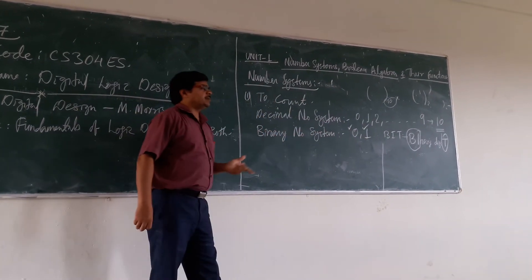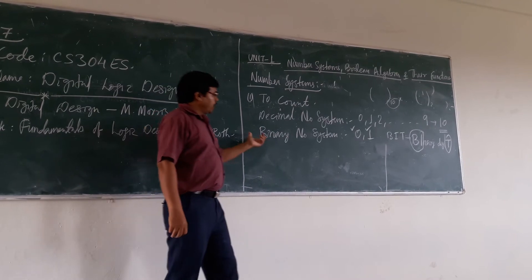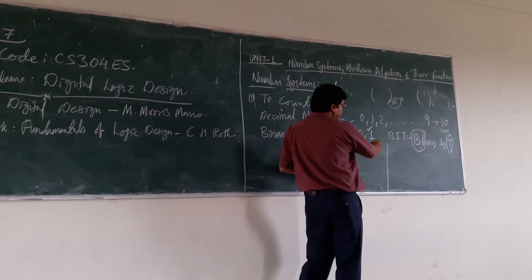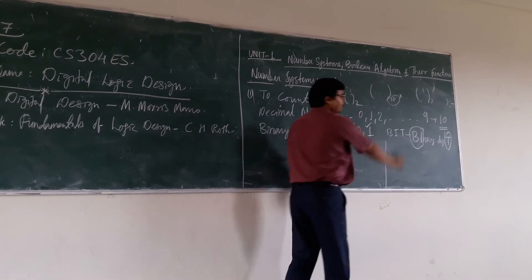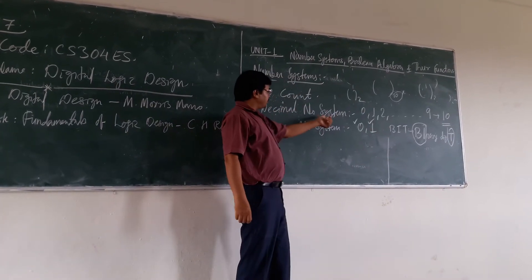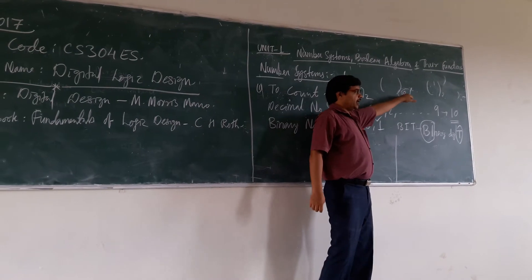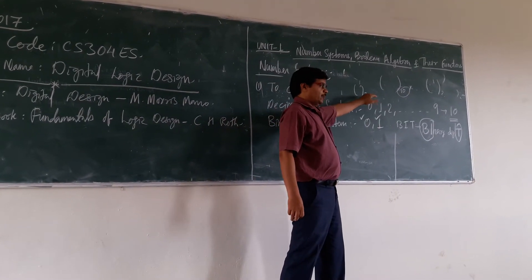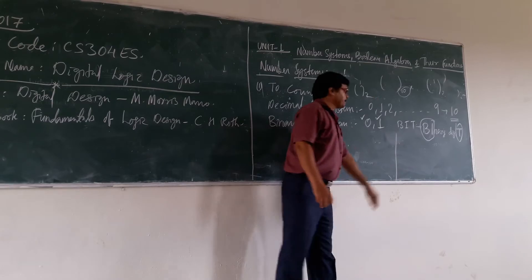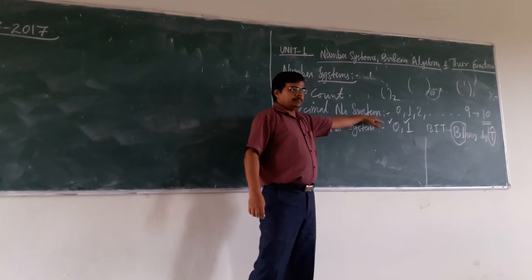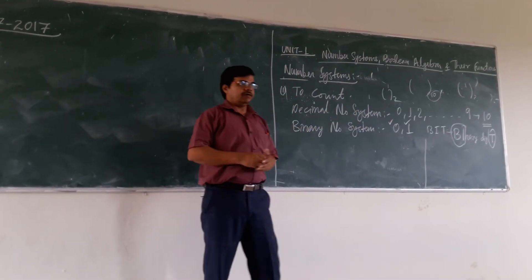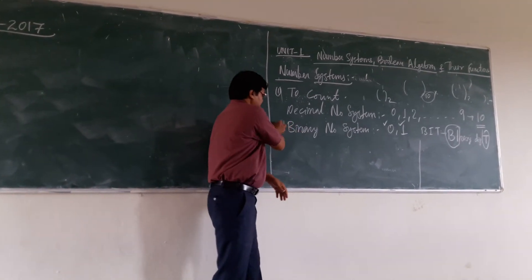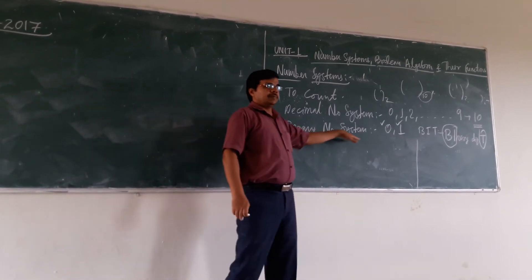In the binary number system, the base will be 2. In the decimal number system, you are having base 10; in the binary number system, you are having base 2. We use the decimal number system in our daily life, but computers understand the binary number system.